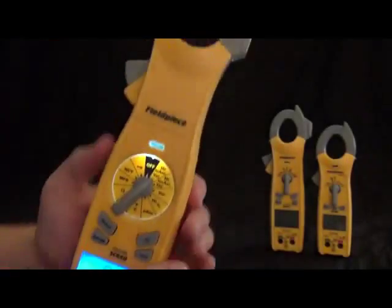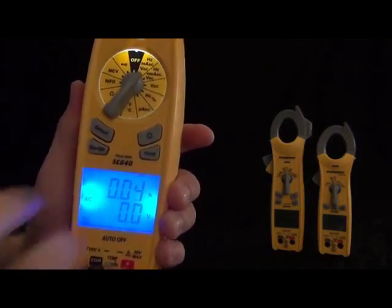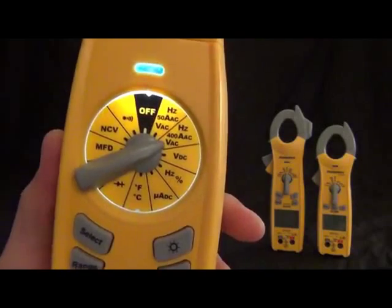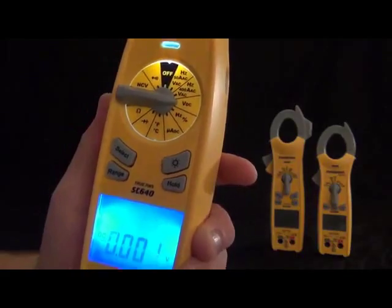Then we got volts DC, this is measuring with the leads. Then we got hertz and duty cycle, and this one's also with the leads. So when you need frequency or duty cycle, it'll show them both at the same time on the dual display.